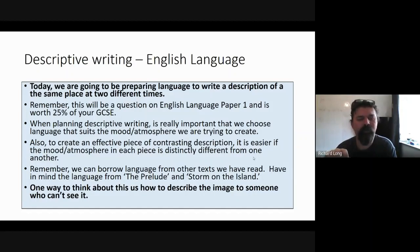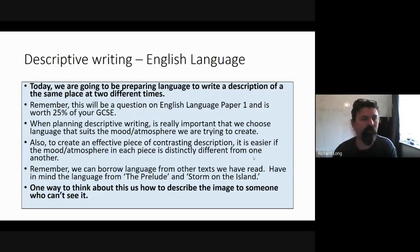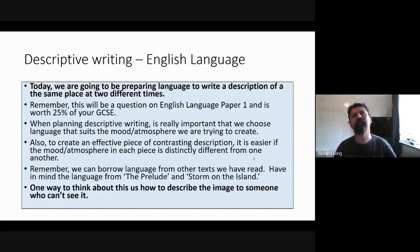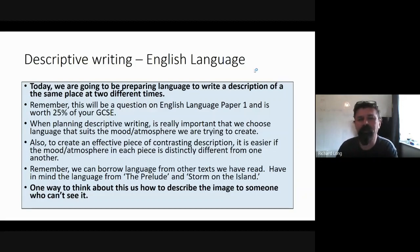One way to think about this is: how do you describe the image to someone who can't see it? If you were on the phone or texting a relative or friend and trying to describe the scene — how do you describe it so that they can visualize it? If you just say 'oh, there's a lighthouse and it's blue' — well, what's blue? The lighthouse? The sky? The sea? You need to imagine you're describing it to somebody, and they really need to visualize it.